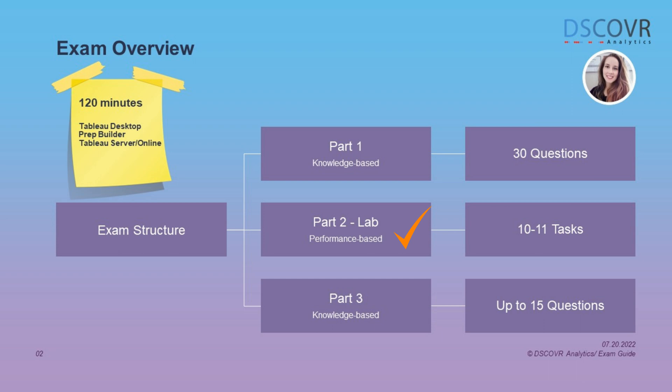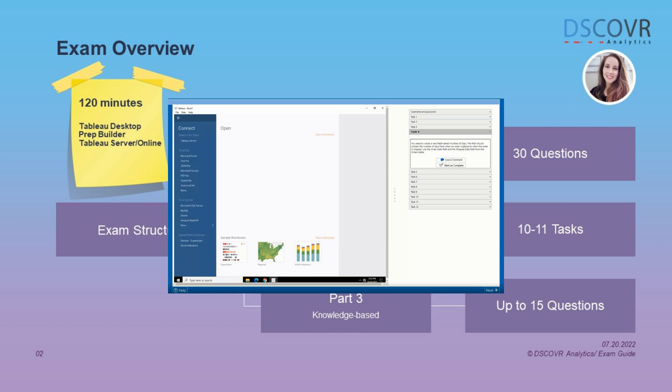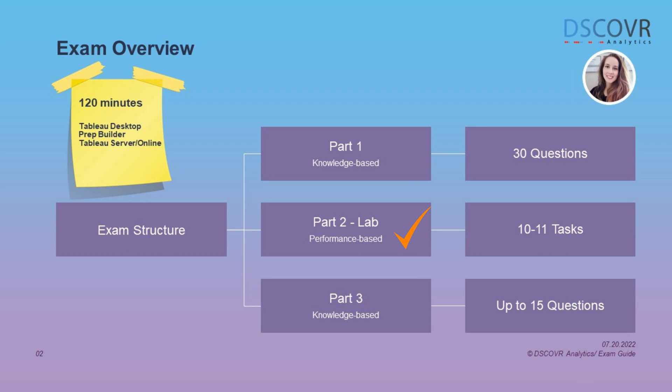The second section of the exam is hands-on, performed in a lab environment where you'll be asked to create content or make modifications to existing content. This part consists of anywhere between 10 to 11 tasks. In my opinion, this section was the easiest to complete, probably because I have a lot of hands-on experience, but generally the questions were straightforward compared to the knowledge-based questions in Section 1, which were a little tricky. If you want to see a demonstration, check out the Performance Based Tutorial link in the description. I'll also be creating a mock lab-style workbook for Domain 2 so you know what to expect.